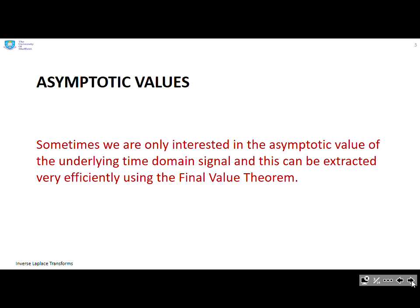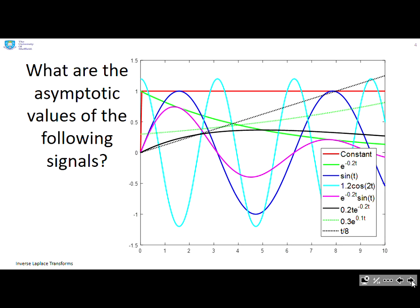Asymptotic values: sometimes we're only interested in the asymptotic value of the underlying time domain signal, and this can be extracted very efficiently using the final value theorem. Let's make sure we understand what we mean by asymptotic values — what are the asymptotic values of the following signals? You can see the signals are all listed down here in the legend.